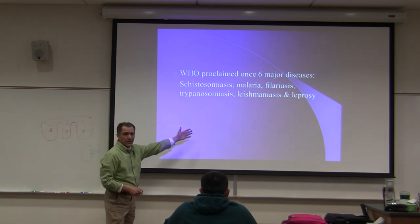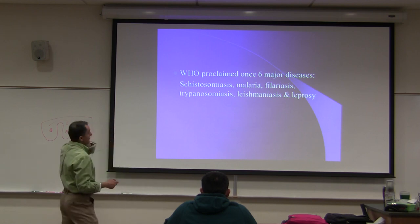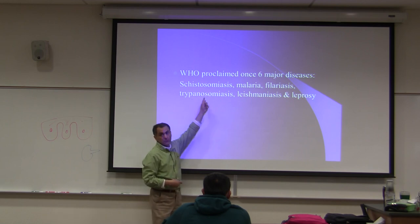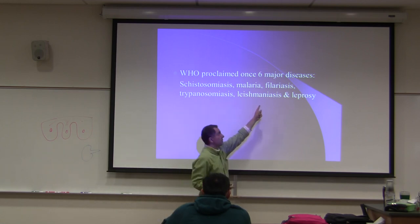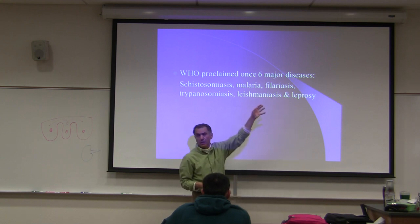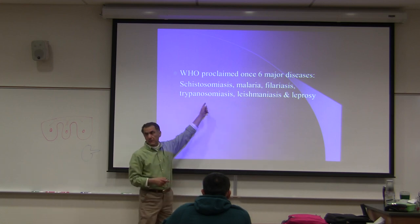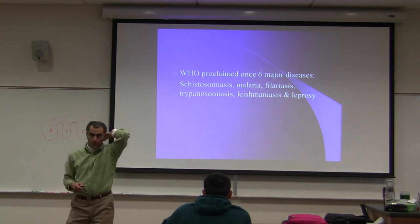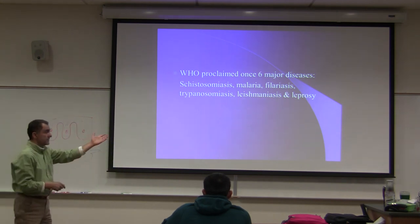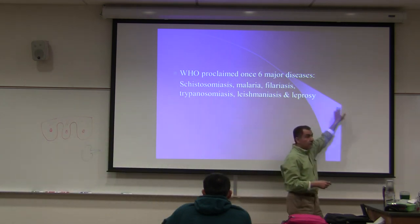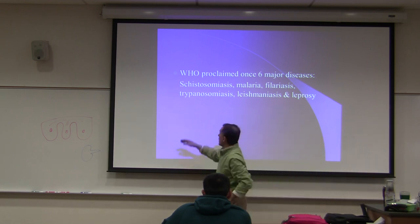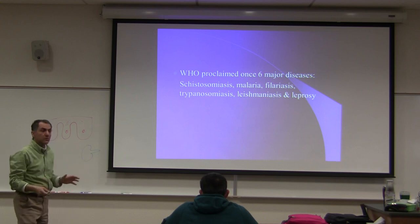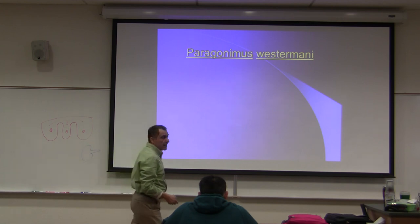The World Health Organization proclaimed six major diseases: schistosomiasis - which you're studying; malaria, which kills many people; filariasis, which we'll talk about later; trypanosomiasis, which you know; leishmaniasis, which you know; and leprosy. Out of these six, five are parasites - five of them that are not commonly mentioned in U.S. medical schools because we don't have much of a problem with them in the United States. Paragonimus westermani is found in the United States.